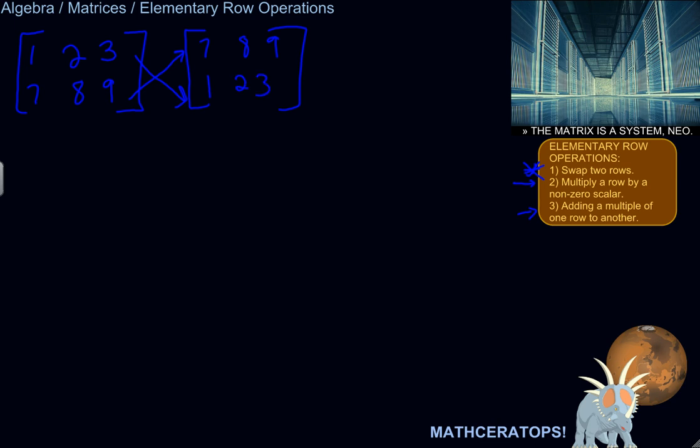Okay. You can multiply a row by a non-zero scalar. So for example, I'm going to multiply row 1 by 3. So this is becoming 3 times row 1. Okay, row 2 stays the same. I didn't do anything to that.